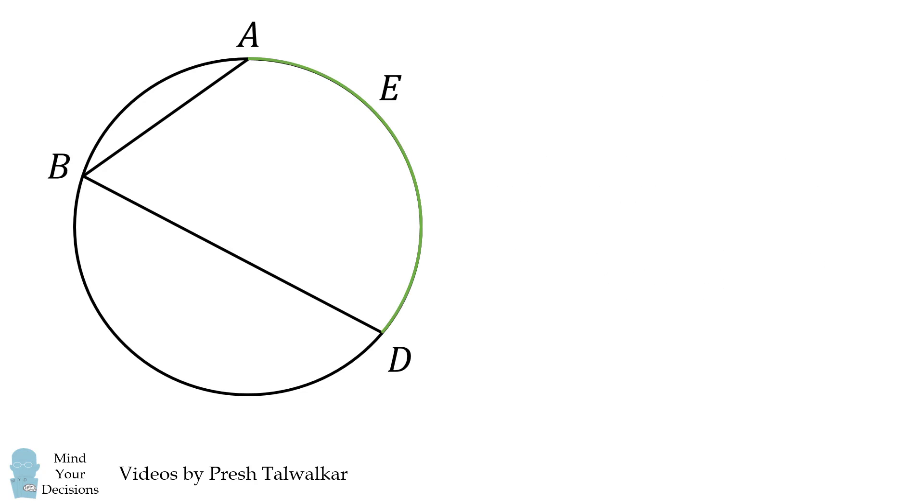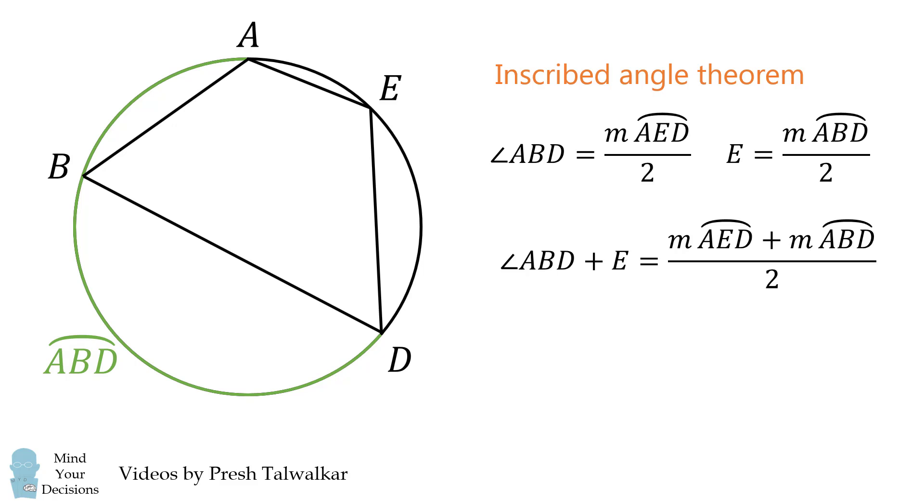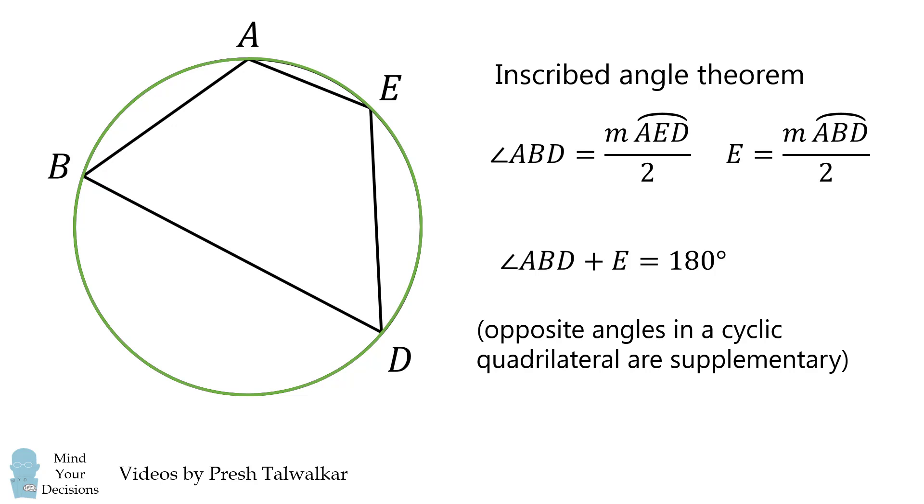We'll consider the arcs of these inscribed angles. Here we have one arc, and the inscribed angle will be half its measure. Angle E will be half the measure of ABD. Now we will add these angles together and half the measure of these arcs. But the total measure of these arcs together will be equal to 360 degrees because they span the entire circle. When we make that substitution and then divide by 2, we get that opposite angles in a cyclic quadrilateral are supplementary.